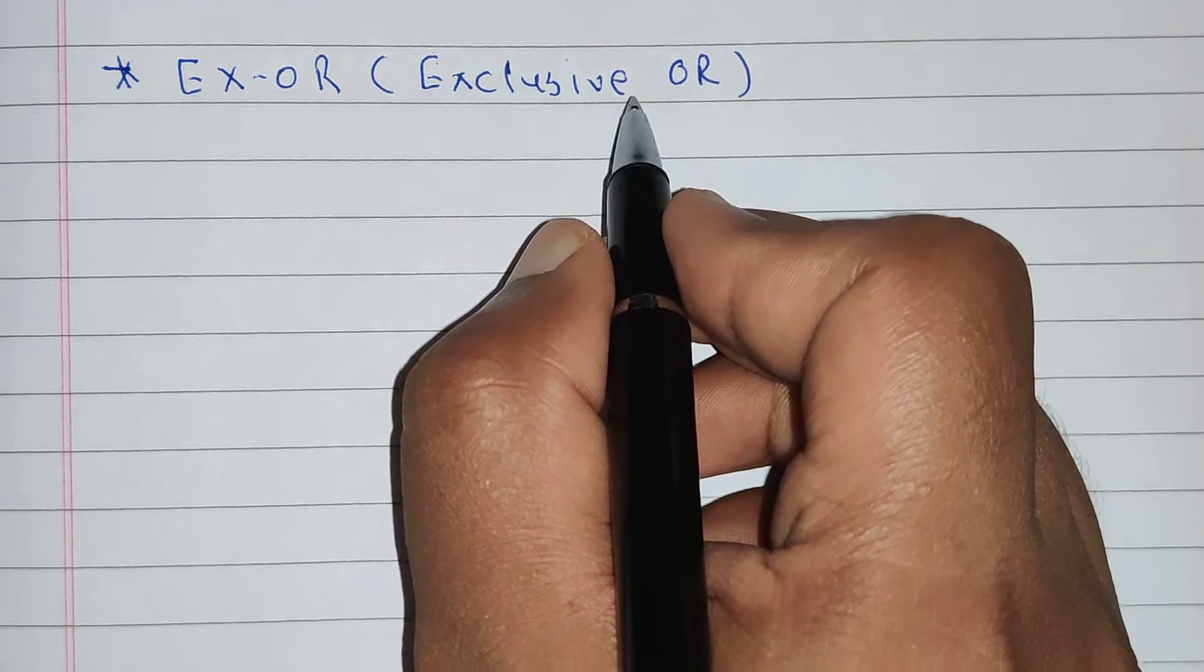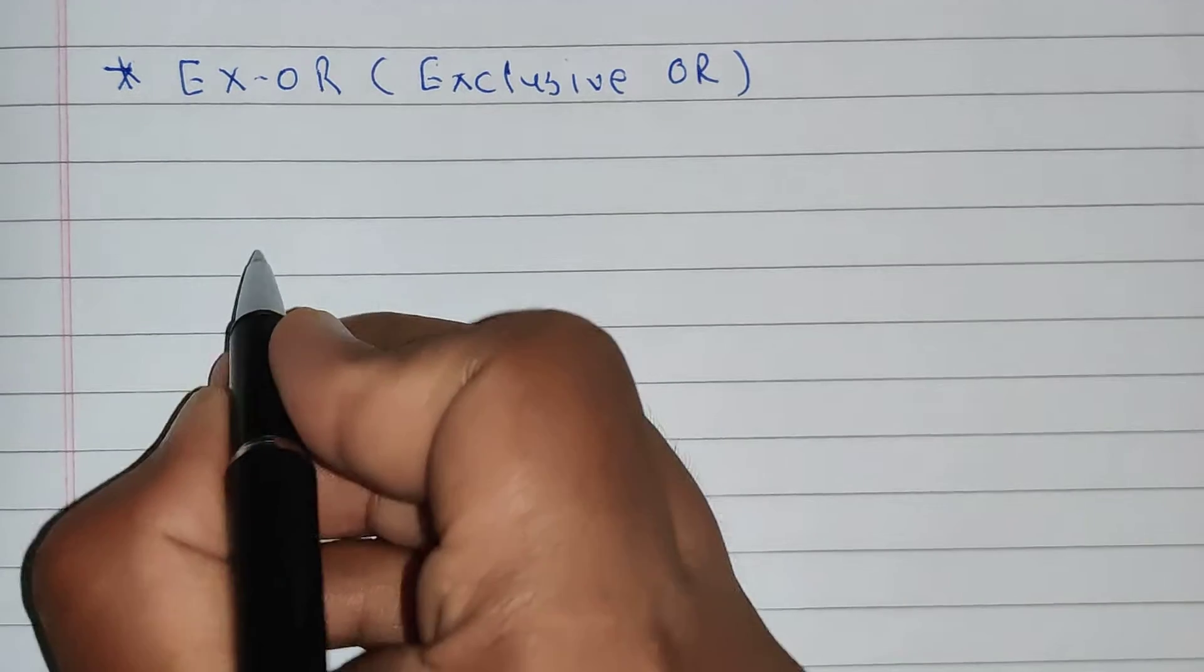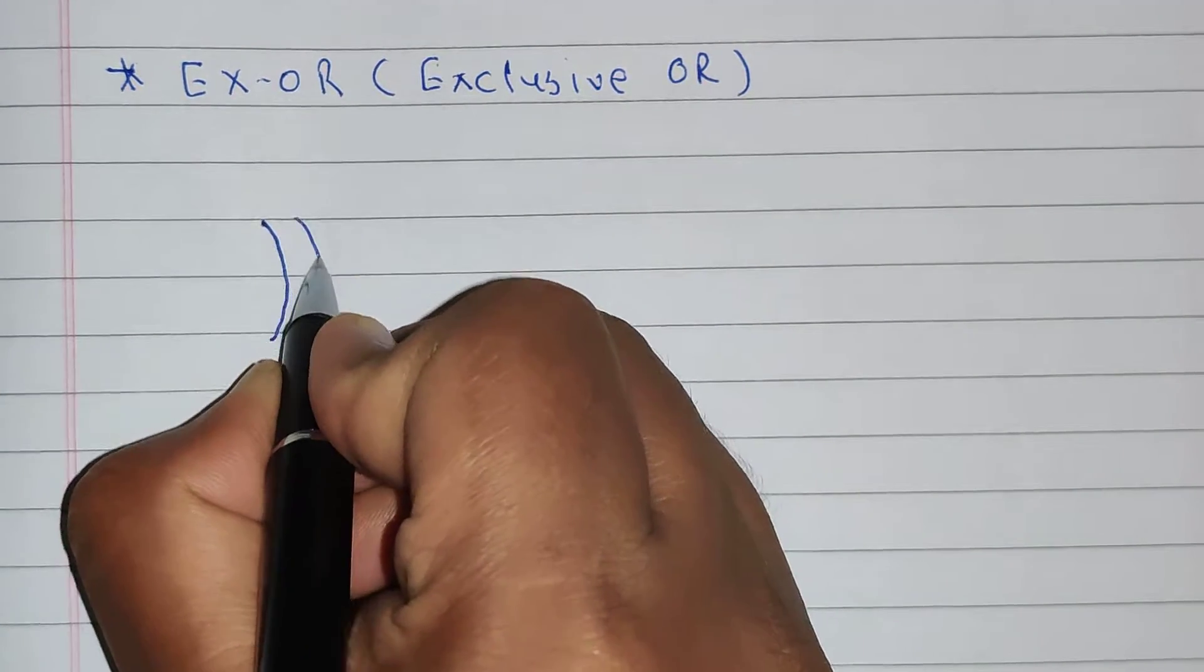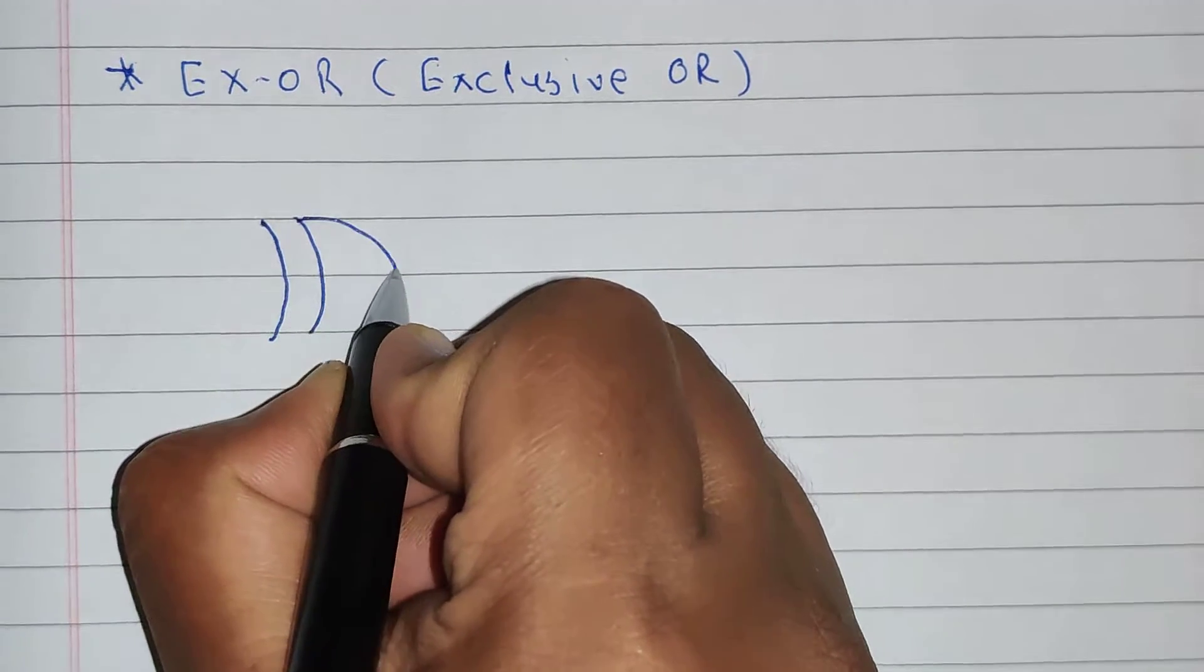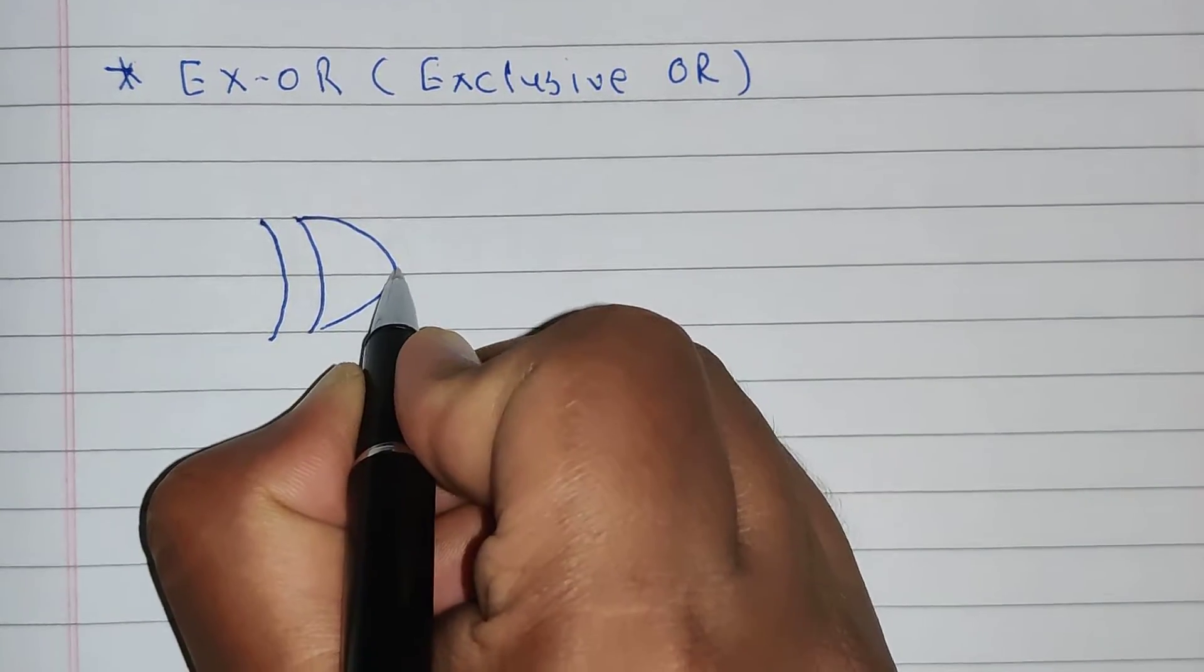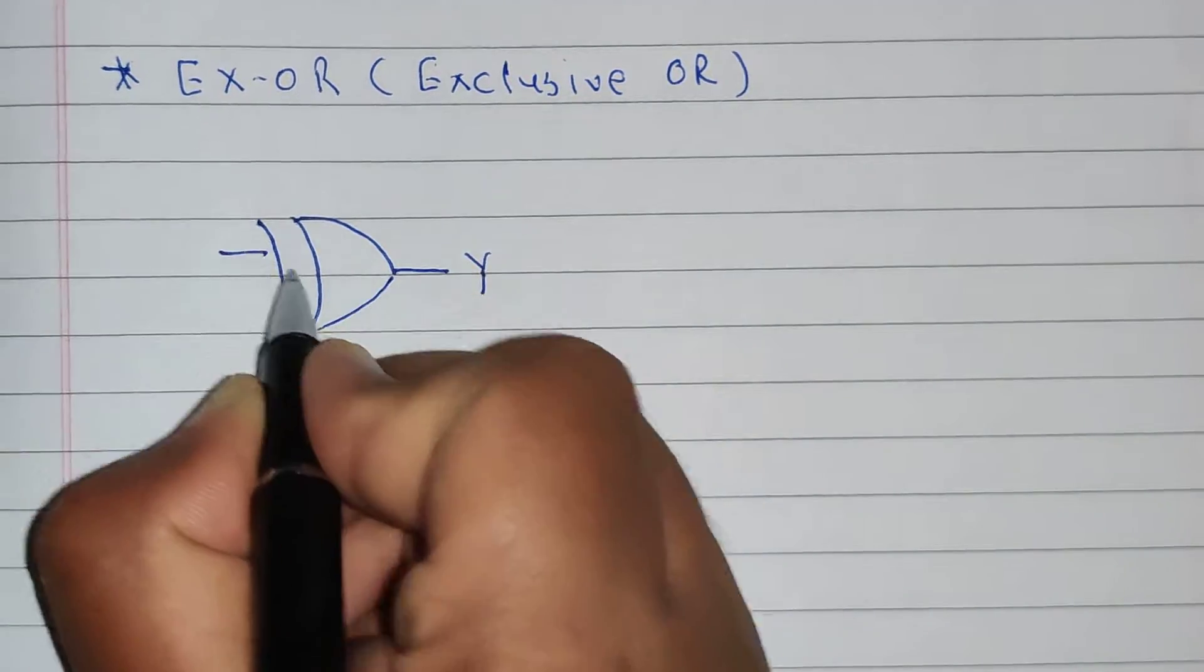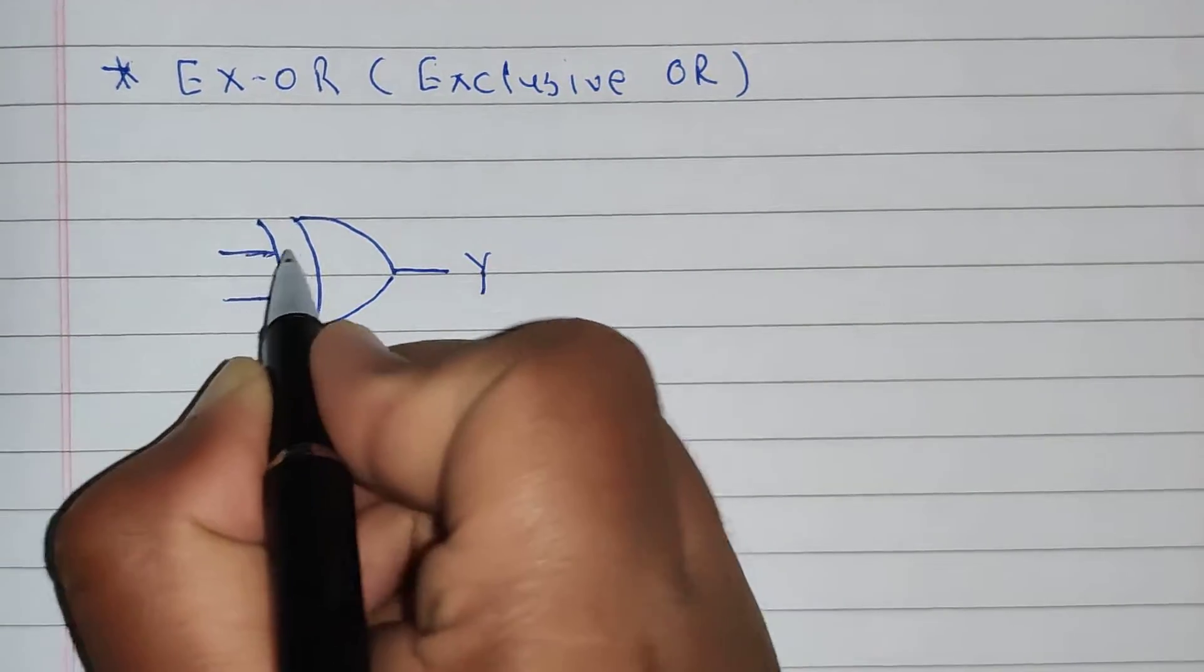Now, let's draw the symbol and truth table of exclusive OR gate. Exclusive OR gate is very simple. We will draw the symbol of exclusive OR gate, which is having one output and two inputs.